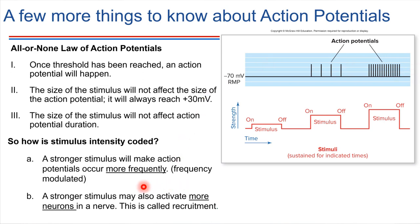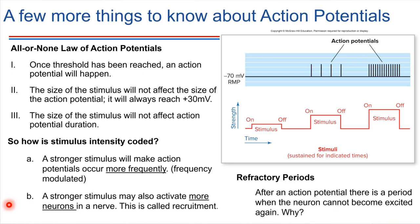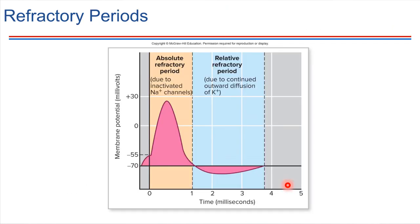There's also a recruitment process that may take place — a stronger stimulus can cause more neurons to be involved in the signaling, which is another way we detect stimulus intensity. One other thing worth noting is the refractory period. Those voltage-gated sodium channels get deactivated with the ball and chain, meaning there's a set amount of time between action potentials during which the cell can't send another. That's called the refractory period, and it occurs after every single action potential.